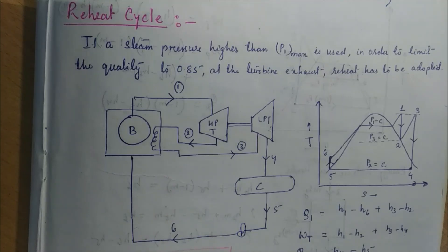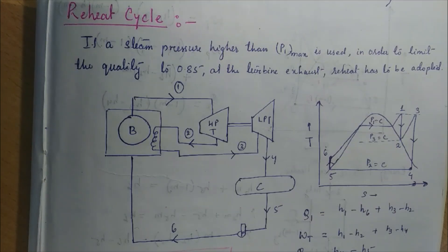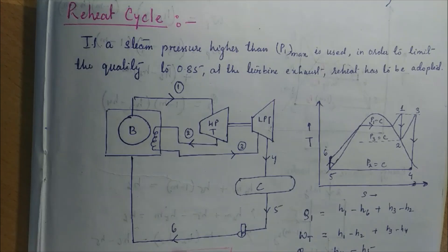We are going to fix the dryness fraction of the wet steam that is exerted from the turbine up to 0.85. When we have to limit the quality or the dryness fraction at the turbine exhaust to be 0.85, we have to use the Reheat cycle. The basic function of all other components will be the same as discussed in the Rankine cycle.